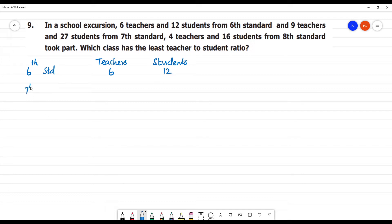We have 7th standard. In the 7th standard, we have 9 teachers and 27 students. In the 8th standard, we have 4 teachers and 16 students took part. Which class has the least teacher-student ratio?